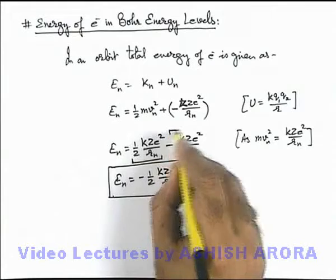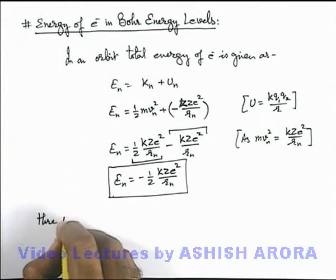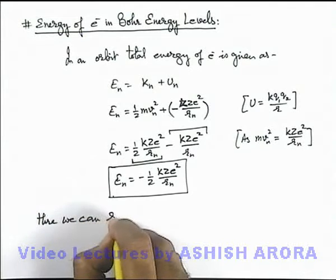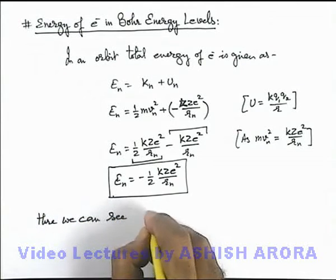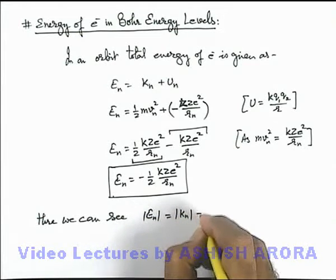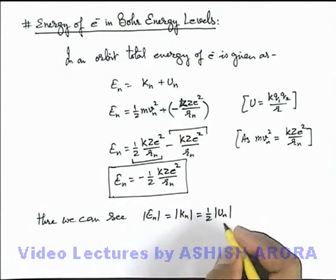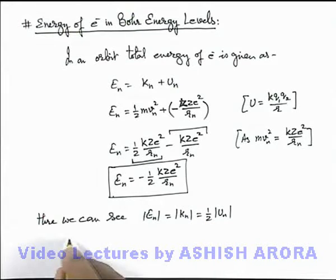The potential energy is negative of the twice of this value. So here we can see in this situation the magnitude of total energy is equal to magnitude of kinetic energy which is equal to half of the magnitude of potential energy, and this is the same relation we use.